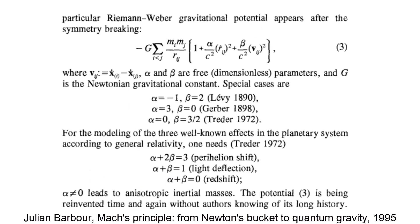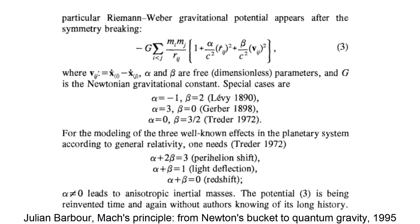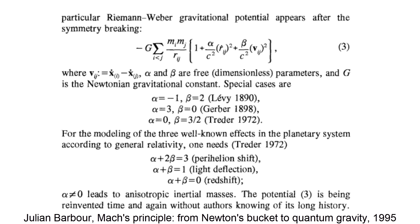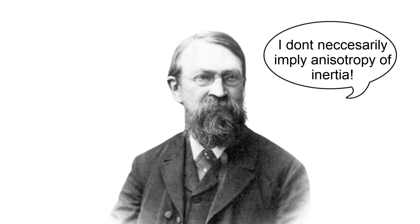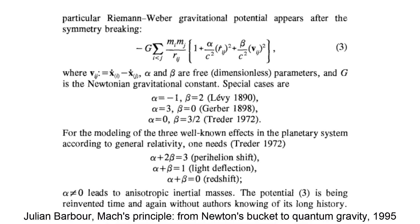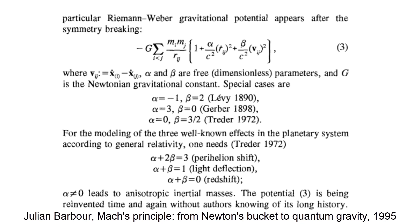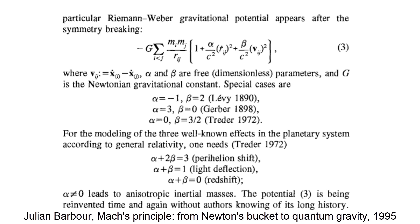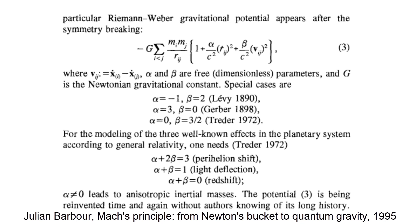Träder avoided the anisotropy of inertial mass through his velocity-dependent gravitational potential based on the relative velocities between masses, which leaves inertial mass as a scalar. Therefore, the concern that Mach's principle would inevitably result in anisotropic inertial masses is unjustified. A dependence on the rates of changes of distances between masses, as in Reisner's, Schrödinger's, Assis and Barbour's earlier models, results in a tensorial and thus direction-dependent inertial mass. Sciama's model has a scalar inertial mass.